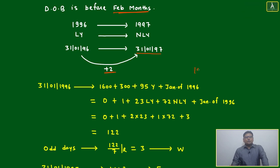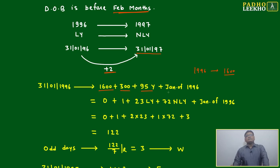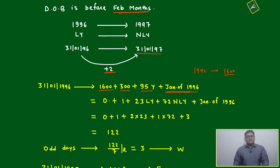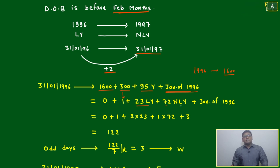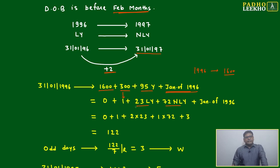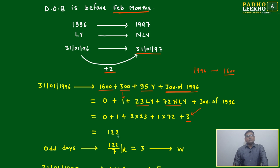To calculate the day for 1996, we break it as: 1600 + 300 + 95 years + January of 1996. 1600 gives 0 odd days; 300 years gives 1 odd day; 95 years = 23 leap + 72 non-leap years; January 1996 contributes 31 days. Total odd days: 0 + 1 + (2×23 + 72) + 3 = 122. 122 ÷ 7 gives remainder 3, which is Wednesday.